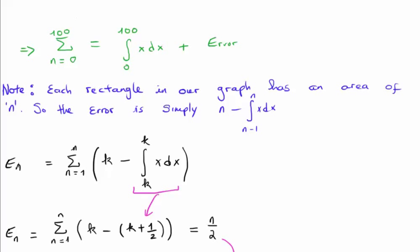So the error is simply n minus the integral from n minus 1 to n of x dx. Note by the way I'm using dummy variables. So inside my summations I'm going to use the variable k, and inside the integrals I'm going to use the dummy variable x.